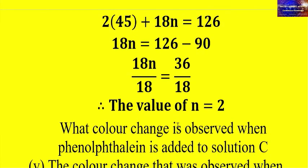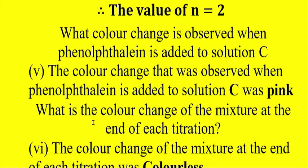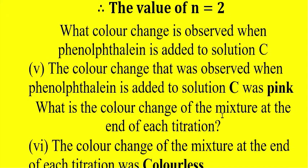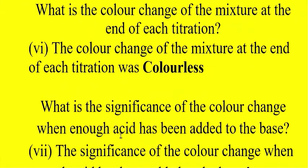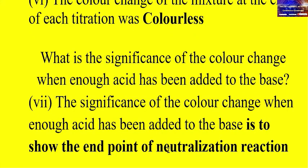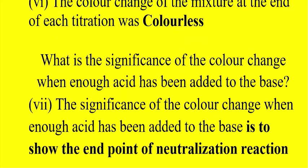When phenolphthalein indicator is added to solution C (the base), the color change observed is pink. The color change of the mixture at the end of each titration is colorless — from pink (base) to colorless at the neutral point. The significance of the color change is to show the endpoint of the neutralization reaction. That is our experiment and how it is solved.